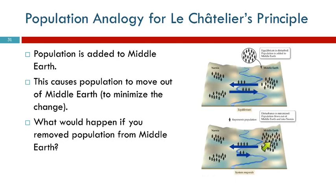So you reduce the population, and the equilibrium shifts to increase it. You get the idea — Narnia fighting back against change.